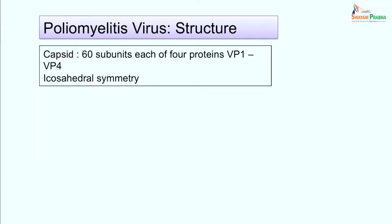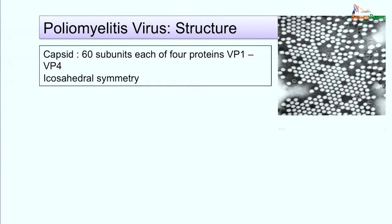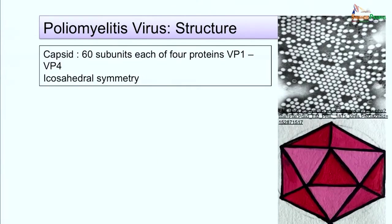Poliomyelitis virus is the most important cause of acute flaccid paralysis. It is about 27 to 30 nanometers in size and has icosahedral symmetry. The virus capsid is made up of 60 subunits, and each subunit has 4 proteins: VP1 to VP4. VP1 is the outermost protein and gets attached to neutralizing type-specific antibodies. The RNA is a single-stranded positive-sense RNA, directly translated by cellular ribosomes into a polypeptide, later cleaved into 11 proteins including structural and non-structural proteins.